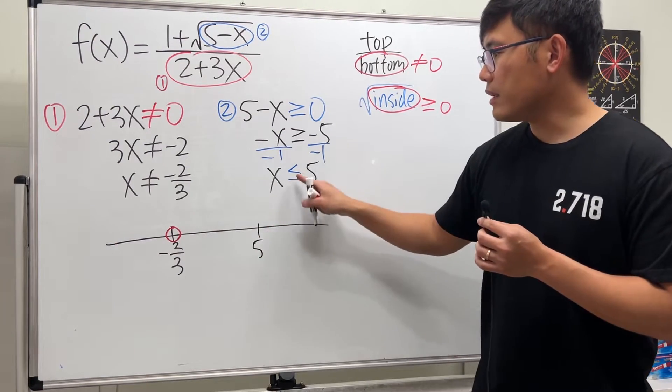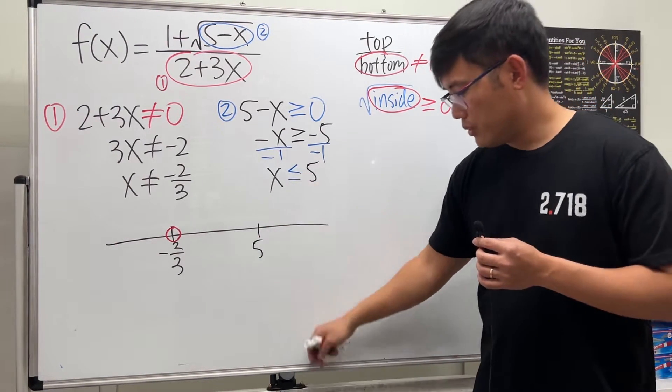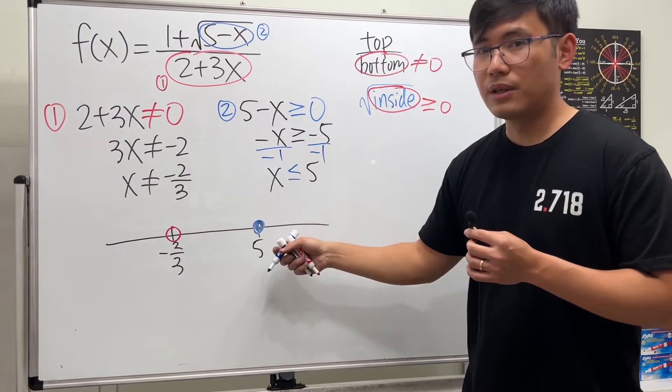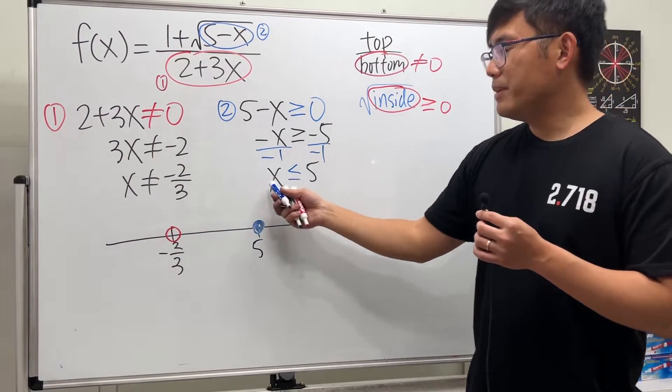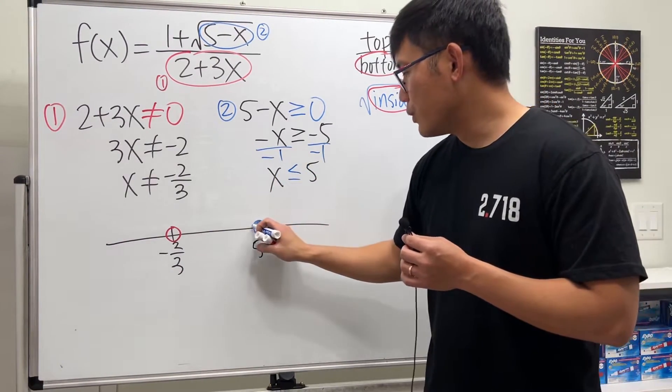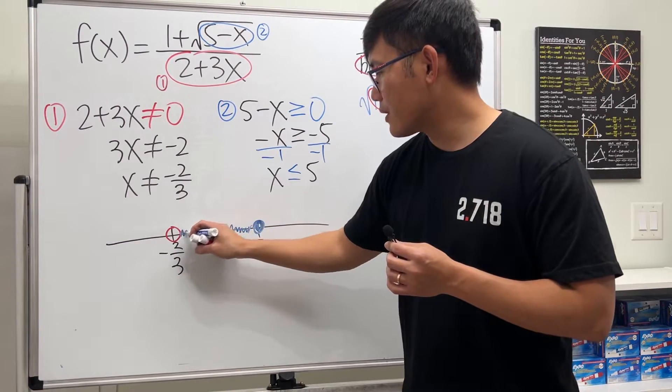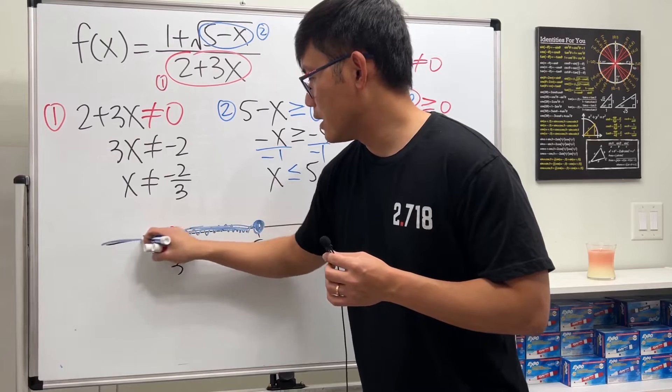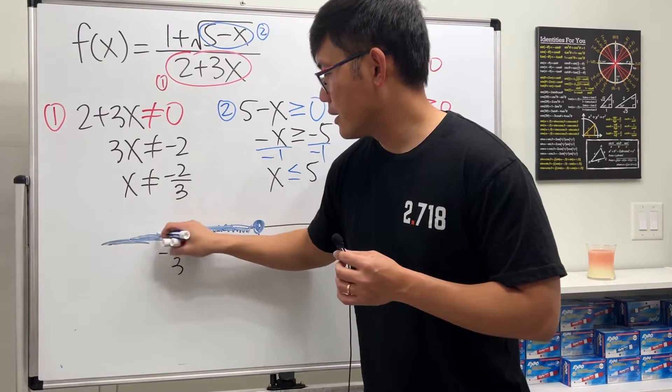It's less than or equal to, so it's a closed circle. Because x is less than or equal to 5, we go to the left, so we pretty much color all the numbers to the left, just like that.